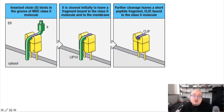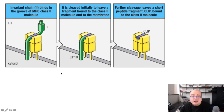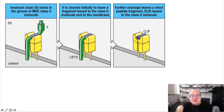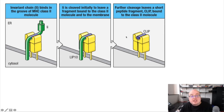As the MHC class II molecule buds off from the endoplasmic reticulum and begins to enter the endocytic pathway, the invariant chain starts to be degraded and ultimately leaves behind only a molecule called CLIP. CLIP is a fragment of the invariant chain which still prevents the peptide binding groove from being fully open and able to access antigens. Within the ER the invariant chain does this; once we start entering the endosome, only CLIP remains, but the function of CLIP and the invariant chain are the same — they prevent premature binding of antigen to the MHC class II molecule.